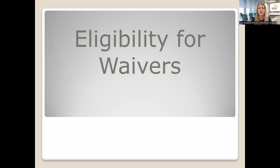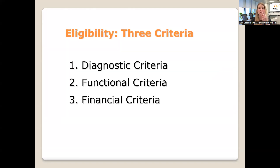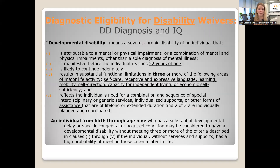First we'll dive into how you know if you're eligible for waivers. Eligibility is looked at in three criteria: the diagnosis — which we touched on briefly — someone's functional support needs (how much help they need to get through daily activities), and financial eligibility. As we talk about each of these pieces, we will compare the DD and the CCC Plus Waiver.